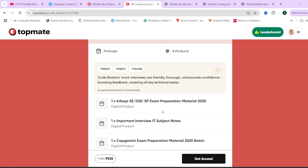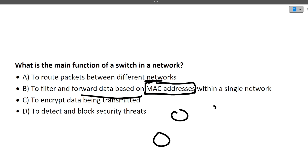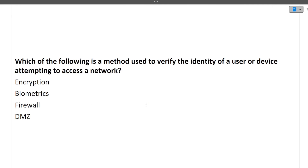The next question is: what is the main function of a switch in a network? First, you should know that a switch works on MAC addresses, while a router works on IP addresses. A switch is used for forwarding data based on MAC addresses within a single network. So if multiple devices are connected in a single network, the switch is responsible for sharing data among them.